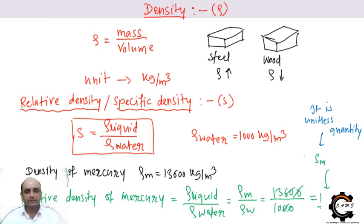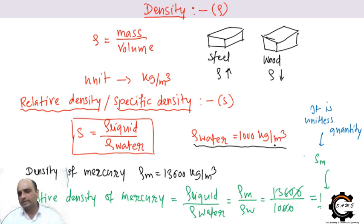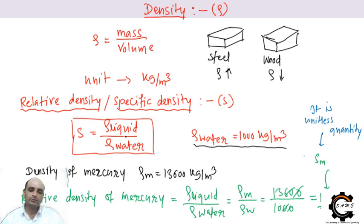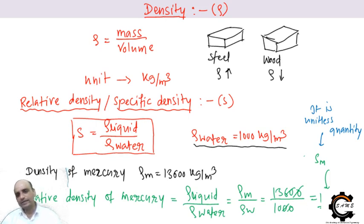Relative density compares the density of a material to the standard density of water, which is 1000 kg/m³. This means a 1m × 1m × 1m box can store 1000 kg of water. Relative density = density of the material / density of water. For mercury, the density is 13.6 times that of water, so its relative density is 13.6.